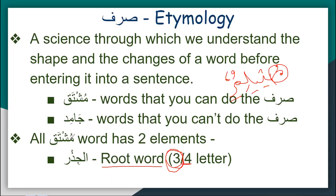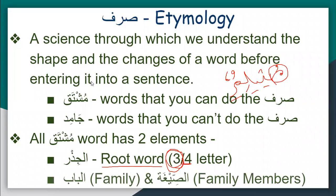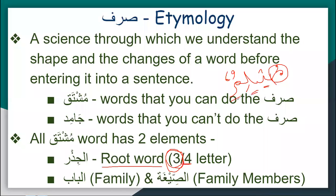Every word that can be made Sarf of has a thing called root letters, and it also has a family and a shape. So we have to study two things in Sarf: what are the root letters, and how the shape is forming — which family it belongs to. The family will be called Bab, and the family members of every group will be called Siga. The root word is called Jism, the family is called Bab, and all the family members are called Siga.